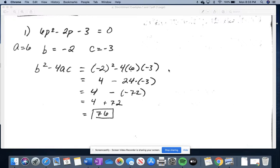One thing you need to be really careful with is the negatives. So negative 2 squared, negative 2 times negative 2 is positive 4, minus 4 times 6 is 24, and we're going to need to multiply that by negative 3. So 24 times negative 3 is negative 72. So this is where we need to be careful. You have 4 minus negative 72, which turns into 4 plus 72, which is 76. So your discriminant for number 1 is 76.